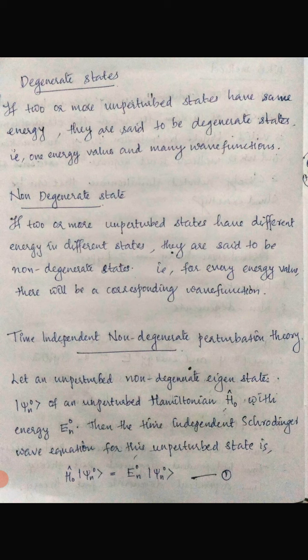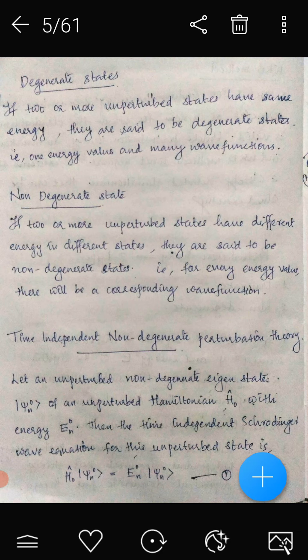Before moving into those topics, we need to understand degenerate and non-degenerate states. If two or more unperturbed states have the same energy, they are said to be degenerate states — that is, one energy value with many wave functions. Non-degenerate means if two or more unperturbed states have different energies, they are said to be non-degenerate states. In the degenerate case, many wave functions share the same energy eigenvalue, while in the non-degenerate case each energy value has its own corresponding wave function.